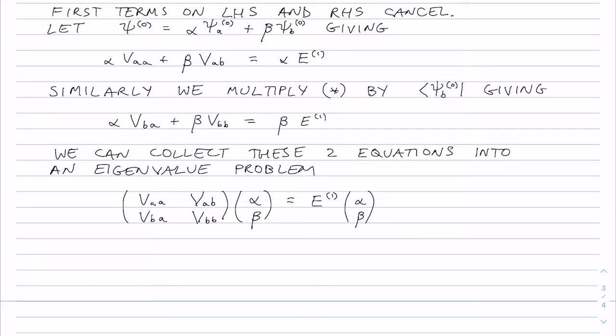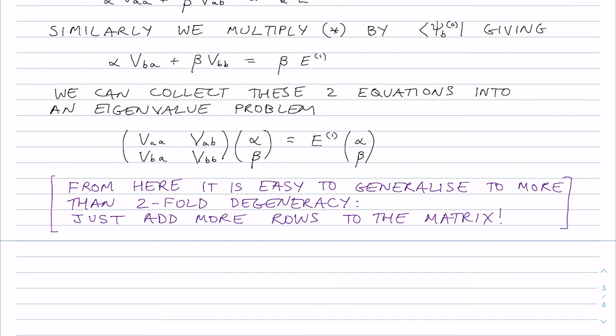And incidentally this is easier to see now how you would go to more than twofold degeneracy, you just add more rows to the matrix. And now we see why we only chose to have twofold degeneracy instead of three or fourfold degeneracy, because the next thing we're going to have to do to solve this eigenvalue problem is take the determinant of that matrix, and doing that for more than two by two matrices is not so much fun.